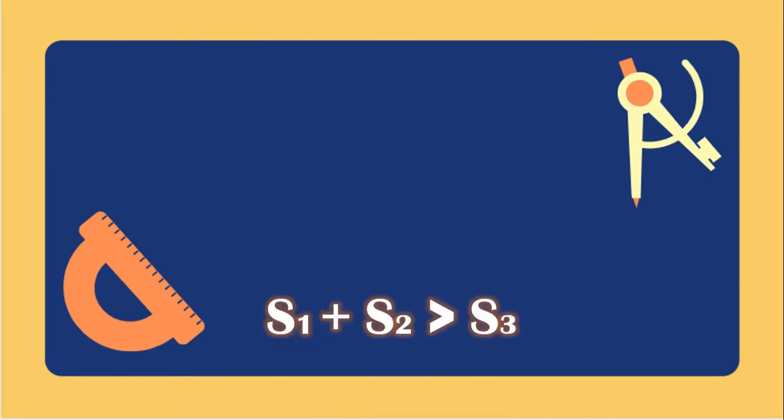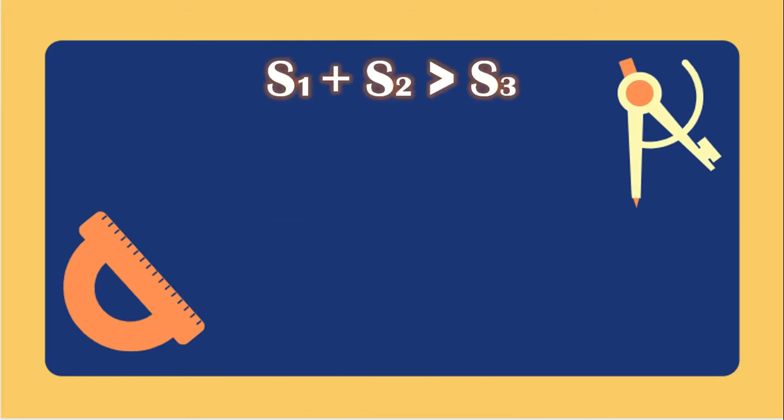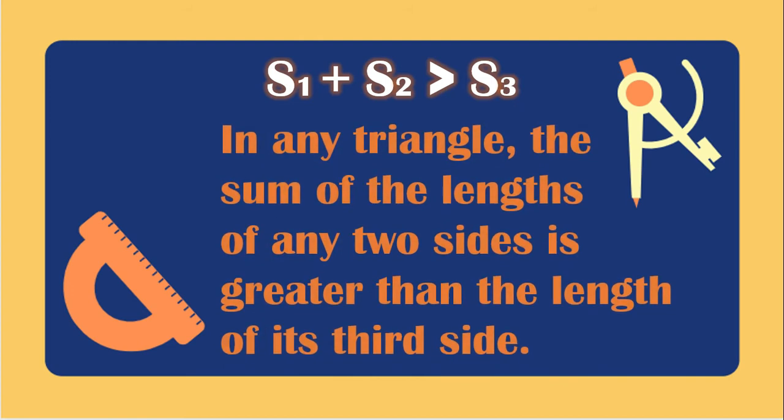Now let's have the third theorem, which is side 1 plus side 2 greater than side 3. In any triangle, the sum of the length of any two sides is greater than the length of its third side. We need to add the two sides, and the sum should be greater than the third side.